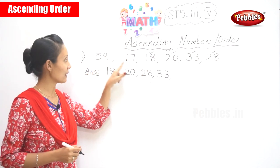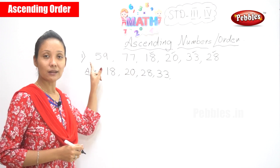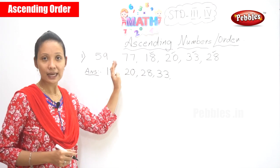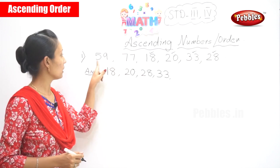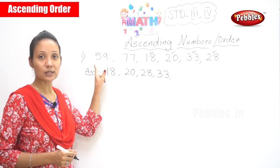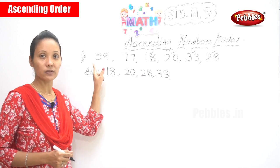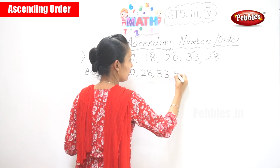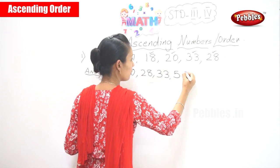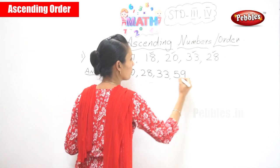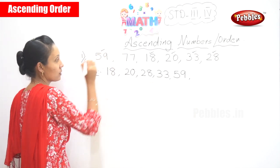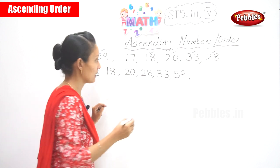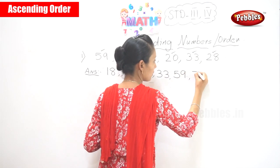Now next you have 59 and 77. So now you write 59. You are finished with this number. How many numbers do you have left now? Only one number — that is 77. So you will write 77.